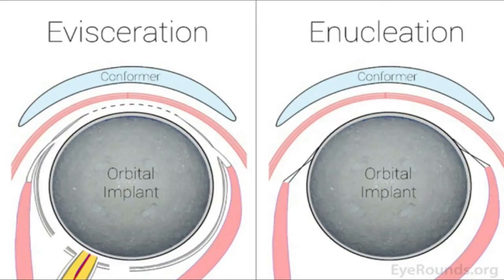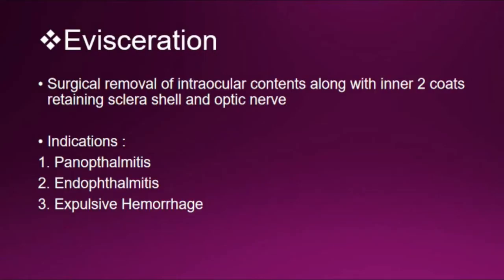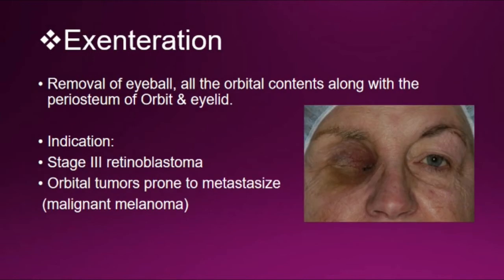Evisceration (abyscuration) is the surgical removal of intraocular contents along with the inner two coats, retaining the scleral shell and optic nerve. You can see the picture — intraocular contents are removed with the inner two coats. Indications are panophthalmitis, endophthalmitis, and expulsive hemorrhage.